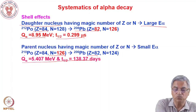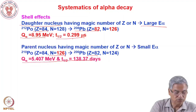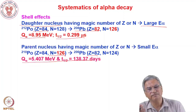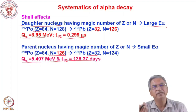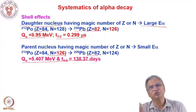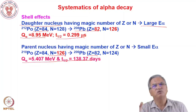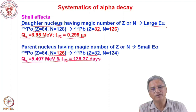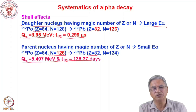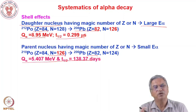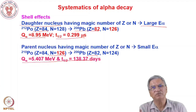So, this is all about alpha decay. I hope I could give you a flavor of alpha decay — why alpha decay is not seen in lower mass nuclei but is seen in heavy nuclei, and how the systematics can be explained using simple concepts. I will stop here. In the next lecture, I will take up beta decay. Thank you very much.